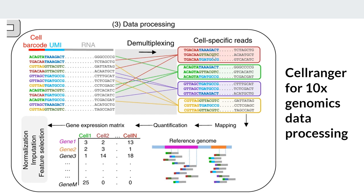Now using the UMI: if two reads share the same UMI — for example both have the UMI 'TGA' and the same RNA sequence — they are PCR duplicates and counted as one, not two. This is UMI deduplication, giving us the real count. So the steps are: first cell demultiplexing (separating reads by cell), then UMI deduplication (removing duplicates using UMI information). Finally, we map the deduplicated reads against the reference genome, count how many reads align to each gene per cell, and generate the final count.